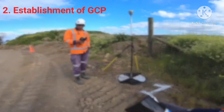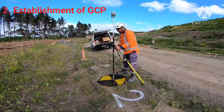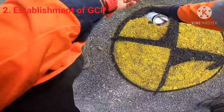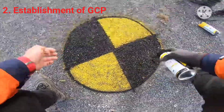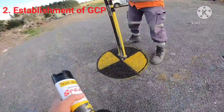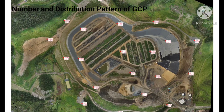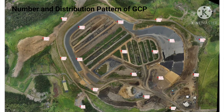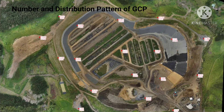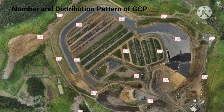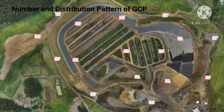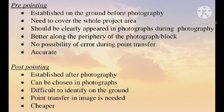After site selection and recce, ground control points are established throughout the area for which the cadastral map is going to be prepared. Ground control points can be established before or after the photography. Here we can see the number and distribution pattern of the GCPs. A minimum of 3 GCPs are required for the orientation. Different studies suggest the use of 5 to 10 GCPs depending upon the topography of an area. Increasing the number of GCPs does not increase the accuracy; rather, the computation would be difficult and lengthy. The difference between pre-pointing and post-pointing of the GCP is also shown on the screen.